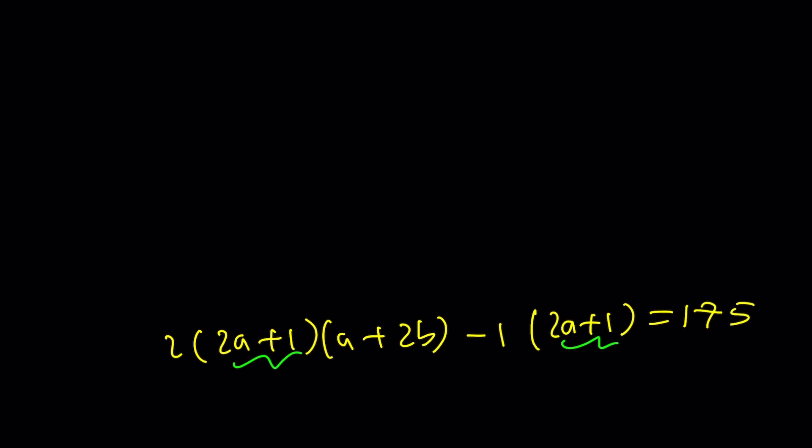So 2a + 1 is a common factor. Pull it out. And now you have 2(a + 2b), which is 2a + 4b. And then of course you have minus 1, so we should subtract 1 from here. And that should be 175. You see, this was the whole thing that we were trying to get all this time.